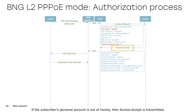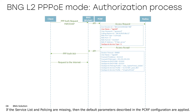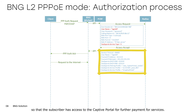If the subscriber's personal account is out of money, then access accept is transmitted, in which the attributes setting the subscriber's restrictions must be specified. This response is sent so that the subscriber can establish a session with BNG. The content is similar to access accept but with a shorter session time. If the service list and policing are missing, then the default parameters described in the PCRF configuration are applied. The subscriber's network parameters should be transmitted so that the subscriber has access to the captive portal for further payment for services.